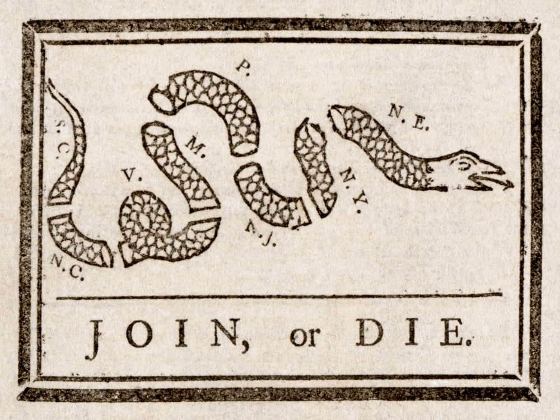Between 1625 and 1775, the colonial population grew from roughly 2,000 to over 2.5 million, often displacing American Indians. In the 18th century, the British government operated its colonies under a policy of mercantilism, in which the central government administered its possessions for the economic benefit of the mother country.